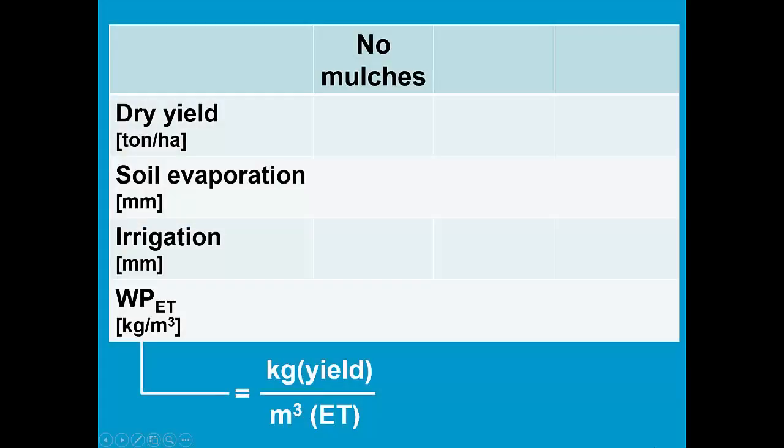So without mulches, we have a yield of 9.9 tons. The soil evaporation is 115.7. We applied 490 mm of water and our water productivity is 1.56.